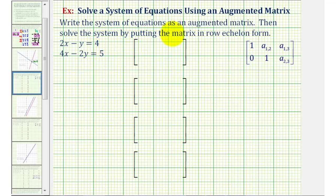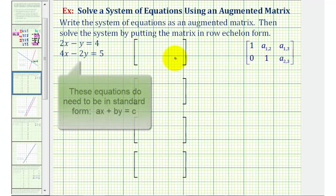We want to write the system of equations as an augmented matrix and then solve the system by writing the matrix in row echelon form. So the first thing we should recognize is that we have a system of two linear equations with two unknowns, so we'll have a two by three augmented matrix.